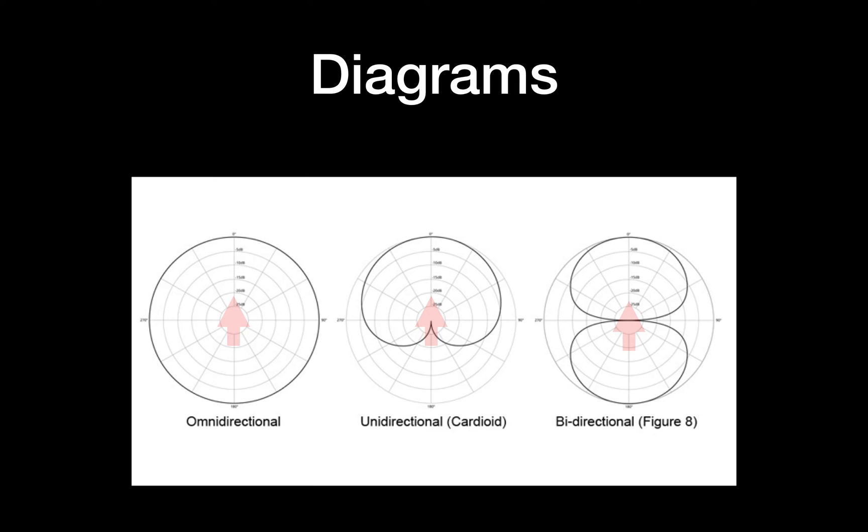If we then go into the center diagram, we've got the cardioid, also known as unidirectional, for one direction. And what we have here is at zero degrees, which is at the top of the diagram, the diagram is at its biggest. That means it will capture sound at zero dB, that means it won't be any quieter.